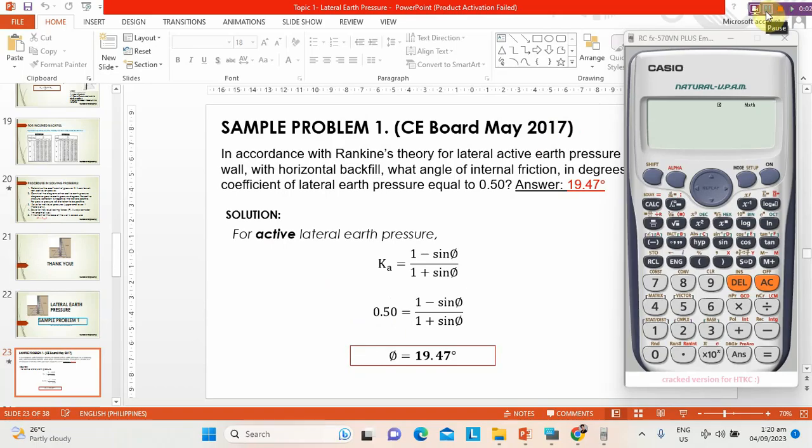Let's use our calculator. Diba, input lang natin to prove that 19.47 is the angle of internal friction. 0.50 equals 1 minus sine x over 1 plus sine x. Tapos shift solve ganito, para mas madali sya ma-solve. Input numbers between 0 to 90 lang kasi diba, 90 degrees lang naman yung isang quadrant.